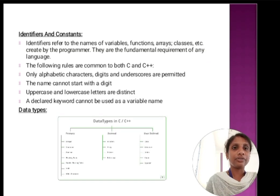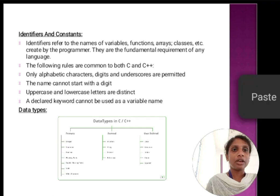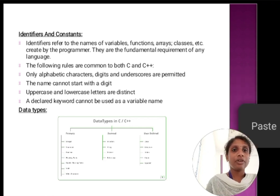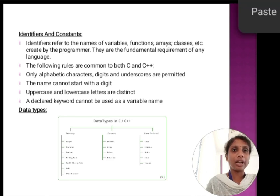Next one is identifiers. Identifiers and constants. Identifiers are the naming of variables. Identifier refers to the name of variables such as functions, arrays, classes, etc., created by the programmers. They are fundamentally required of any language. The following rules are common for both C and C++. For declaring a variable name or function name or array name, only alphabet characters, digits, and underscores are permitted. And then the name cannot be started with digits. If you need a digit, you can start with underscores.